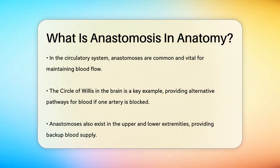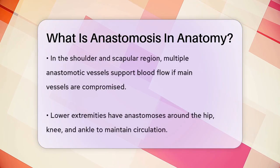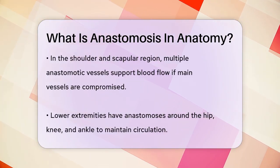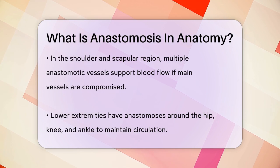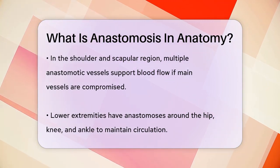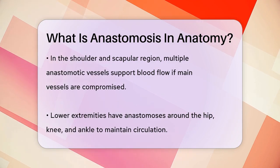Arterial anastomoses also occur in other parts of the body, such as the upper and lower extremities. In the shoulder and scapular region, there are several anastomotic vessels that can provide a backup blood supply if one of the main vessels is compromised. Similarly, in the lower extremities, there are anastomoses around the hip, knee, and ankle that help maintain blood flow even if there's an obstruction.